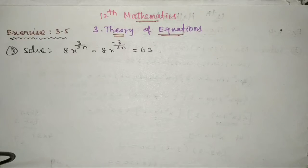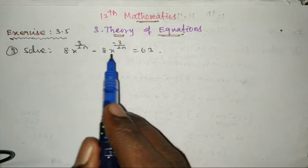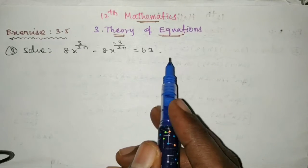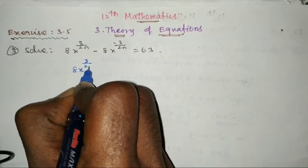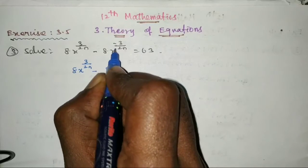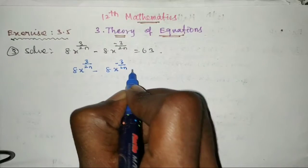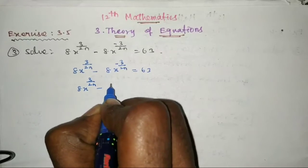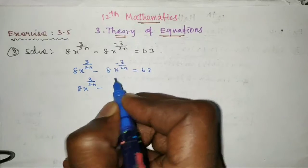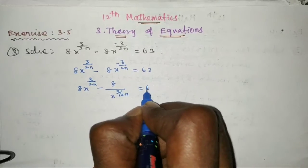Hi, hello viewers. 12th mathematics, Chapter 3, Theory of Equations, Exercise 3.5. Solve: 8x^(3/2n) minus 8x^(-3/2n) equal to 63.